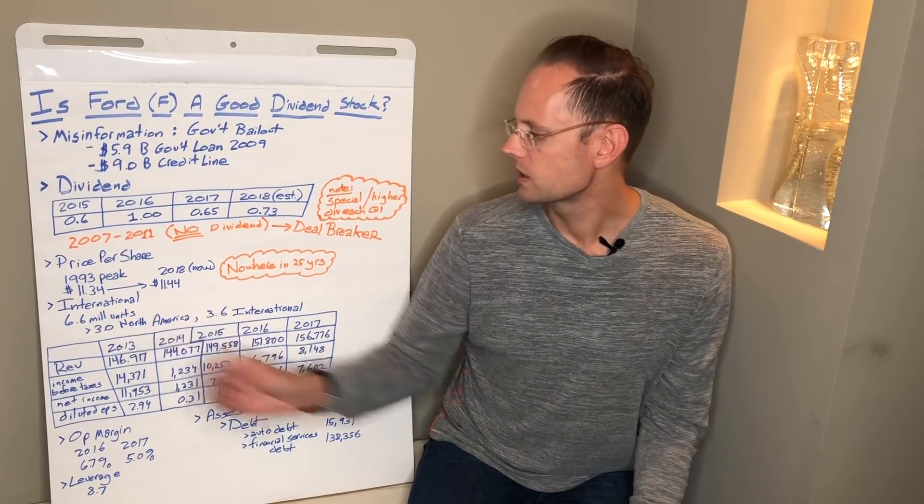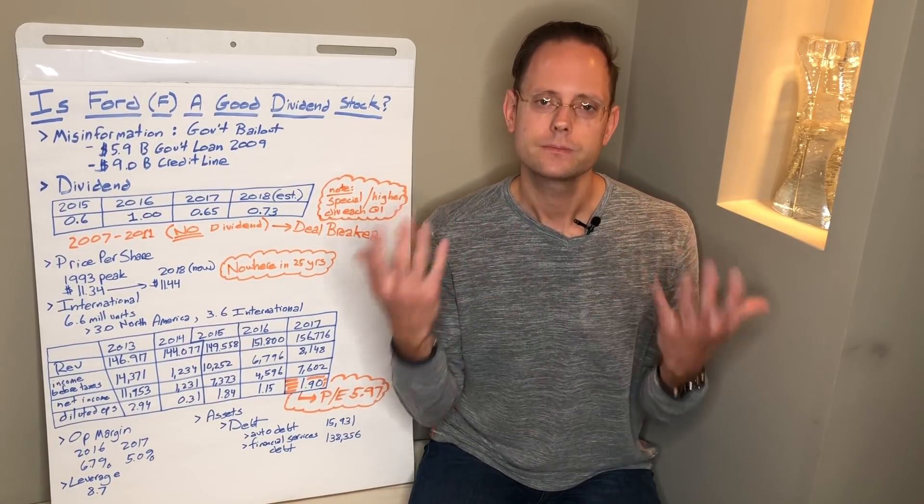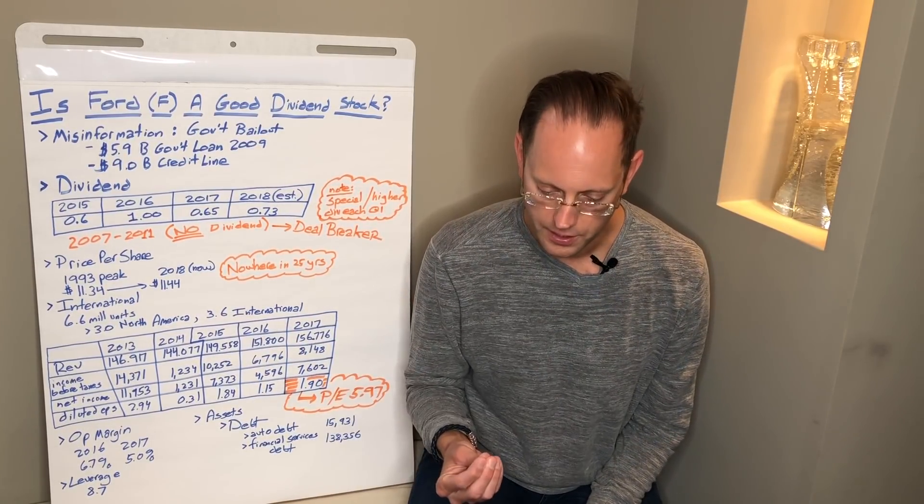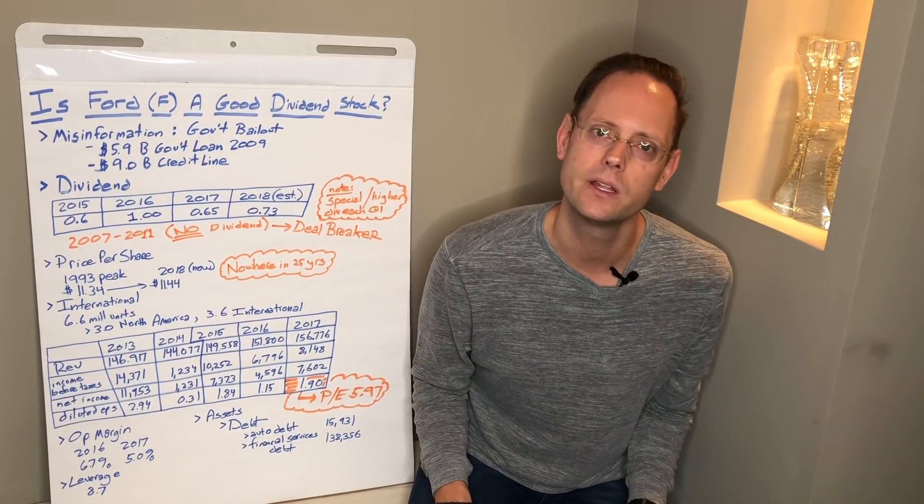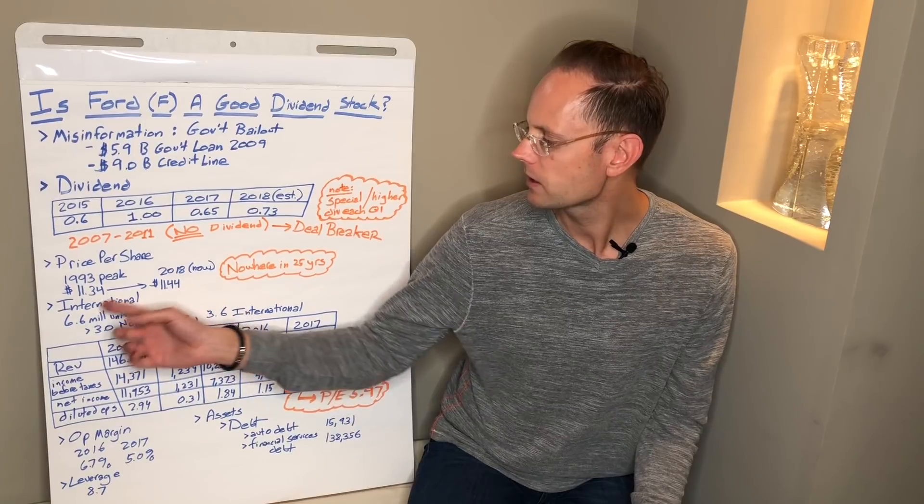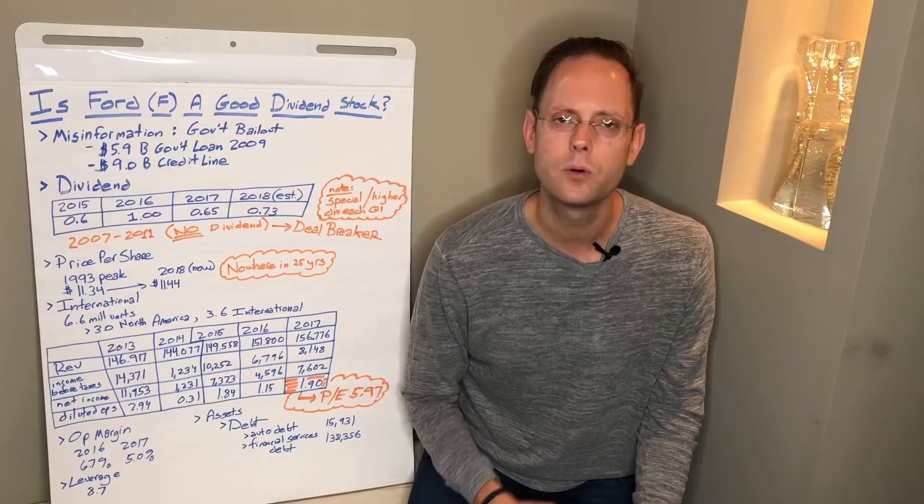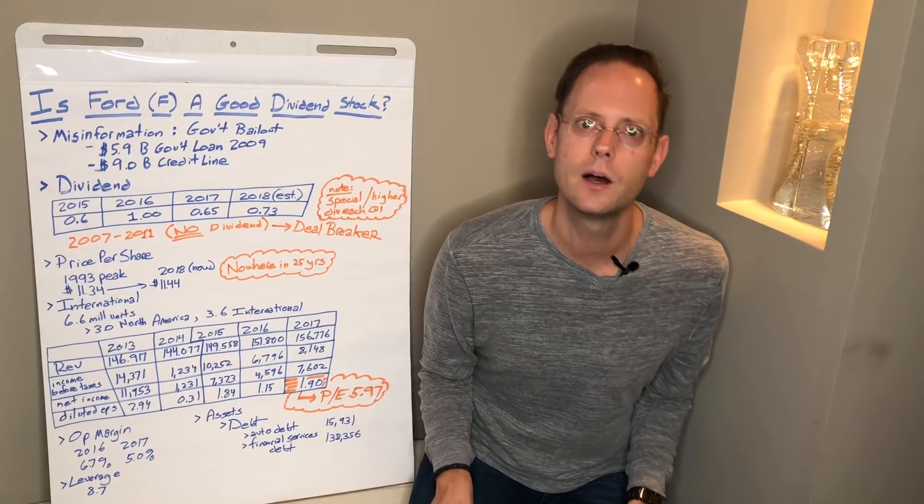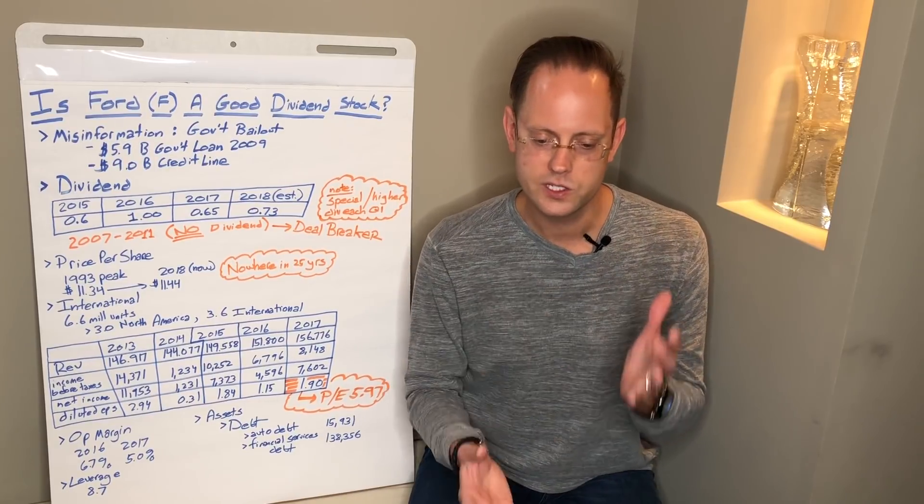Let's look at something interesting here. International business. This is something I didn't know about Ford. You hear about Ford Motor Company. You think, wow, this is an iconic American company. I would imagine most of their automobiles, their trucks, they're sold in the United States. Well, that was something I was surprised to see that they do 6.6 million units in 2017. And only 3.0 of those were in North America. So you've got 3.6 international. That's cool. I like companies that have that international diversification.